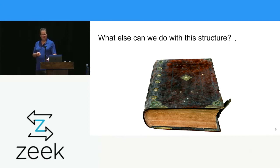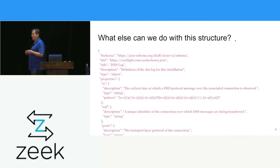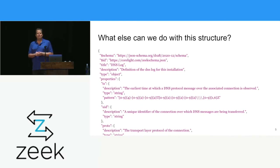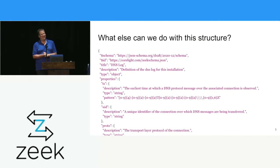A JSON schema looks something like this. It goes through and creates a JSON file that documents each log, all the fields, the types, and what they're for. You can use an open source tool to take that and create RST files, then your RST files go through Sphinx and you've got your docs. Problem is the RST files from the open tools are really bad looking — not something we'd want to publish. So that didn't work.